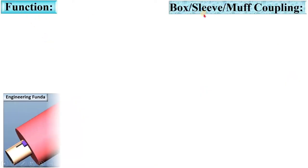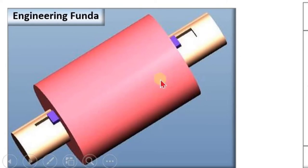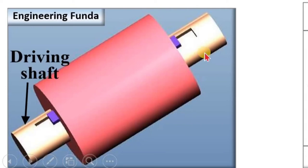Let us start with the function of Box or Sleeve or Muff Coupling. This is a simple figure that you can use in examinations, and this is the 3D figure to understand the function and construction of Box Coupling. First, I will give you the names: this is the Driving Shaft, this one is the Driven Shaft.